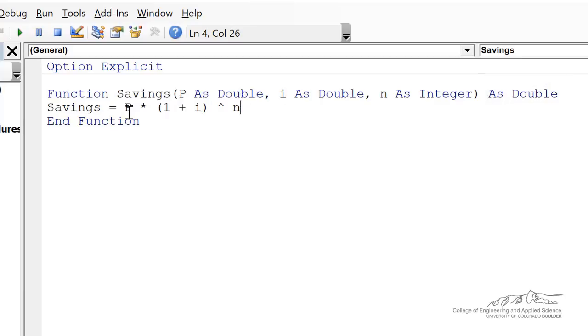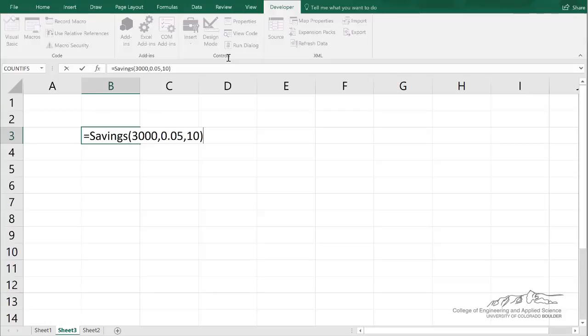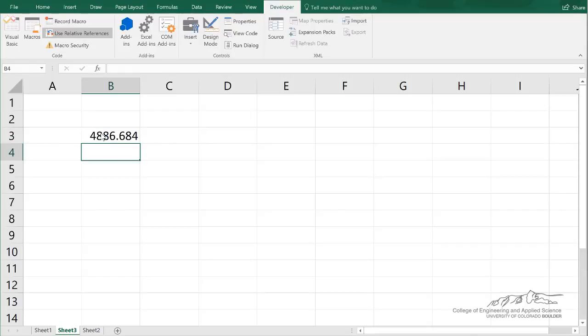You put the expression, the equation here, so the output of a function is always the name of a function, and that's equal to the equation, p times 1 plus i to the n. And I can put this into a cell on the spreadsheet, just like you would another function, and we get our result.